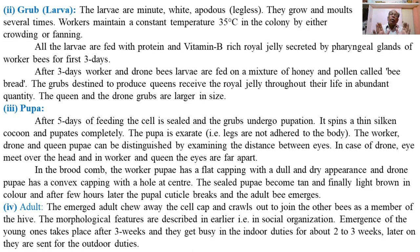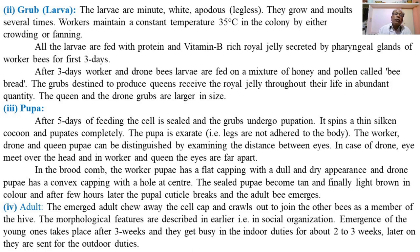The vermiform grub becomes a chrysalis — a pupa — during which several morphological and physiological changes take place, transforming the larva into the adult insect with three distinct body divisions. After five days of feeding, all brood cells are sealed up and the grub undergoes pupation. During pupation, the larva spins a thin silken cocoon around its body and then pupates completely.